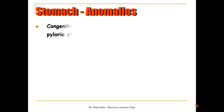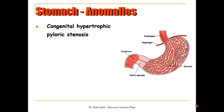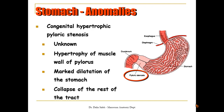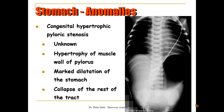Regarding anomalies of the stomach, we have congenital hypertrophic pyloric stenosis, which is of unknown cause. There is hypertrophy of the muscle wall of the pylorus, leading to marked dilatation of the stomach above the obstruction and collapse of the rest of the gastrointestinal tract. As seen in this x-ray, marked dilatation of the stomach is clearly visible.